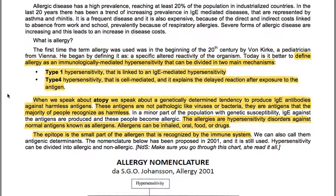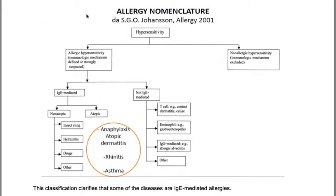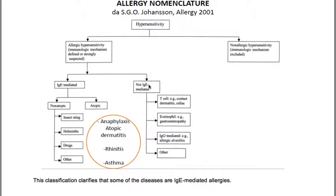Hypersensitivity can be divided into allergic and non-allergic. Allergic hypersensitivity has an immunological mechanism defined or strongly suspected, differentiated into IgE-mediated and non-IgE-mediated. IgE-mediated can be non-atopic — insect sting, drugs and odors — or atopic, including anaphylaxis, atopic dermatitis, rhinitis and asthma. Non-IgE-mediated can be T-cell mediated such as contact dermatitis and celiac disease, or involve eosinophils as in gastroenteropathy. Non-allergic hypersensitivity excludes an immunological mechanism.